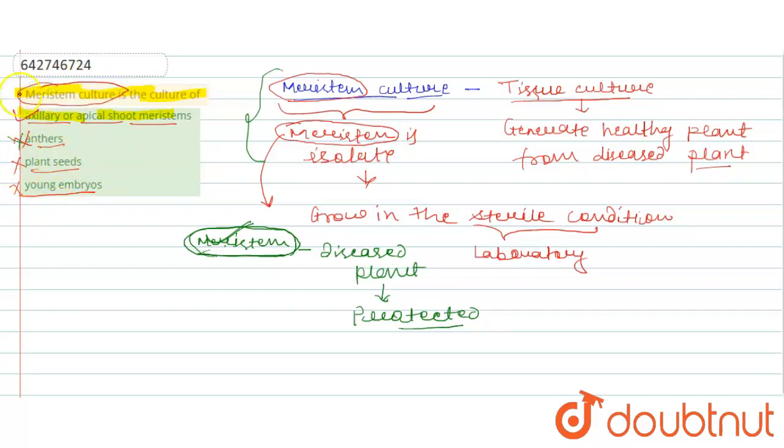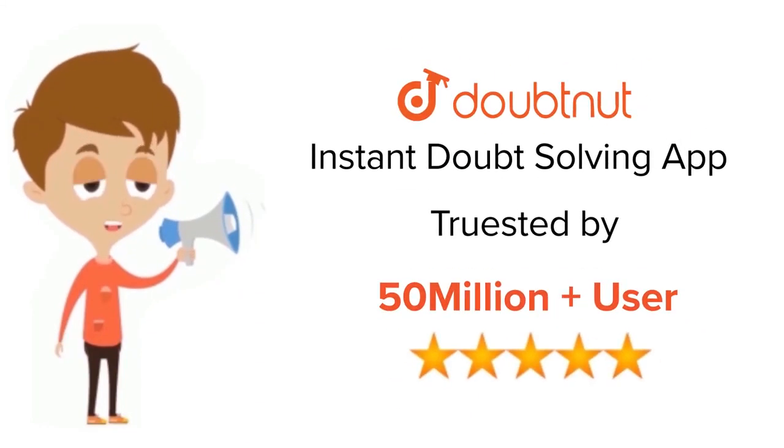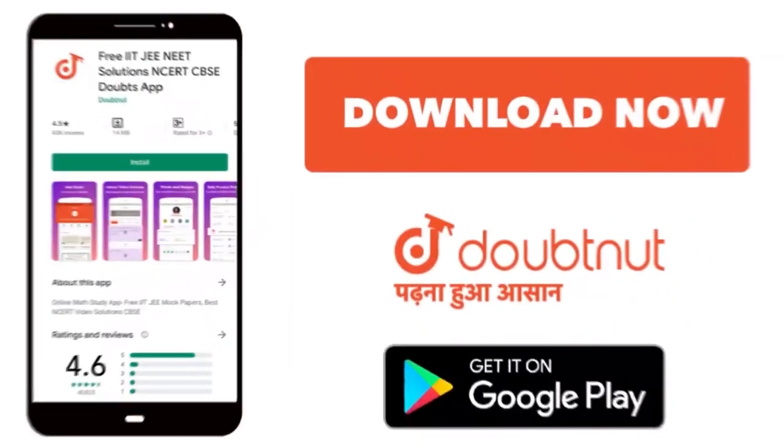So first option is our correct option. Hope you understand well, thank you. For class 6-12, IIT-JEE and NEET level, trusted by more than 5 crore students, download Doubtnet app today.